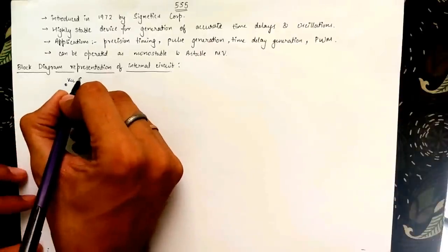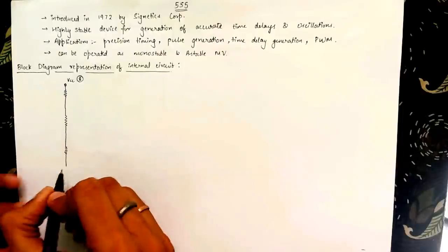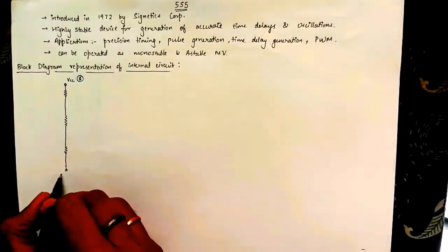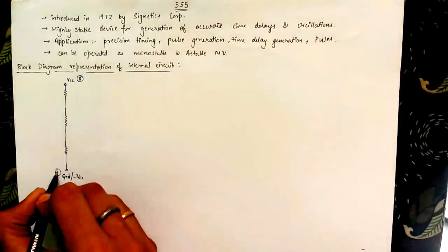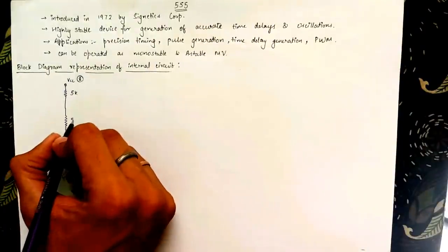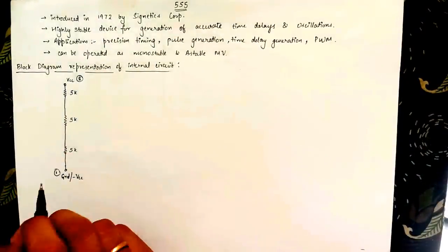The IC is an 8 pin IC with its 8th pin connected to the power supply of the circuit. Then we have 3 resistors connected between the VCC and the ground pin. Ground is pin 1 of the IC. The value of the 3 resistors is 5k each and this gives the IC its traditional name 555.